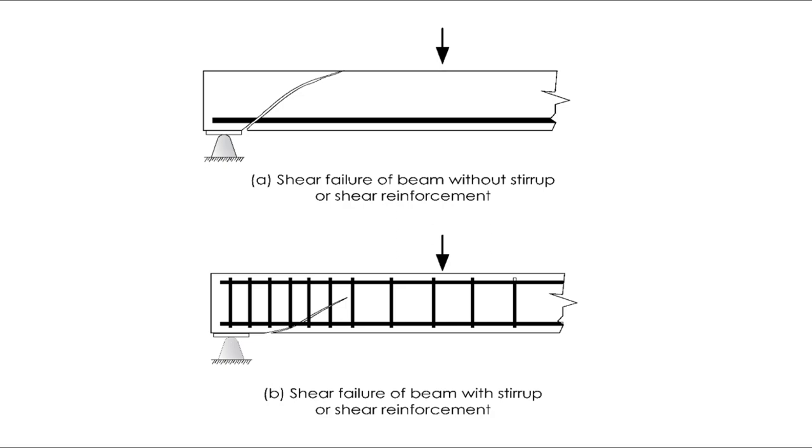Now, let's proceed in the NSCP 2010 code na gagamitin naman natin for the design of shear reinforcement. In section 422.5 are the provision for one-way shear strength. Reduction factor φVN is equal to VU, wherein reduction factor is equal to 0.75 for shear in NSCP 2010. The nominal one-way shear strength at a section VN shall be calculated by VN is equal to VC plus VS.